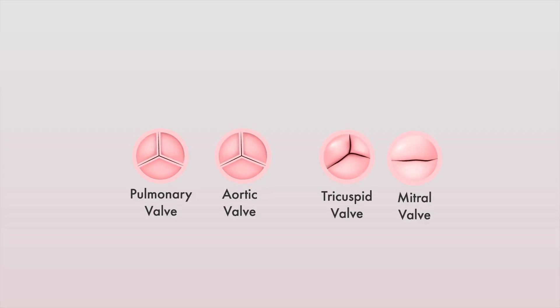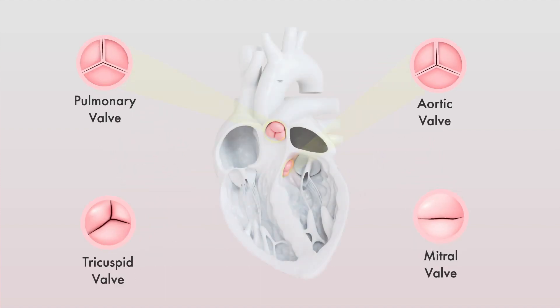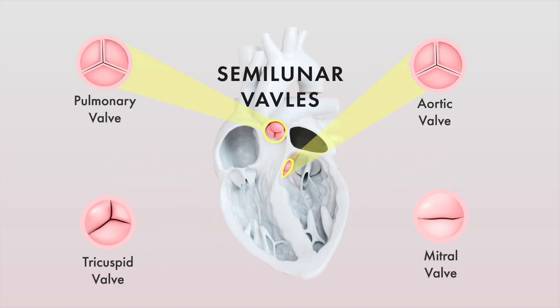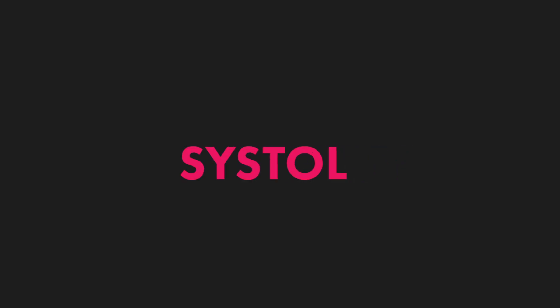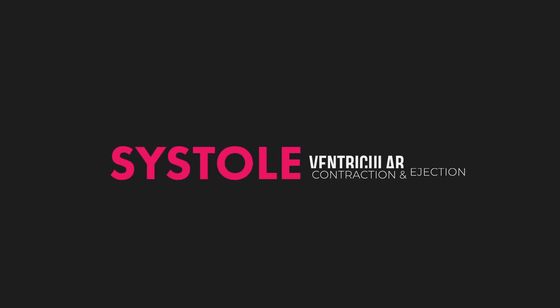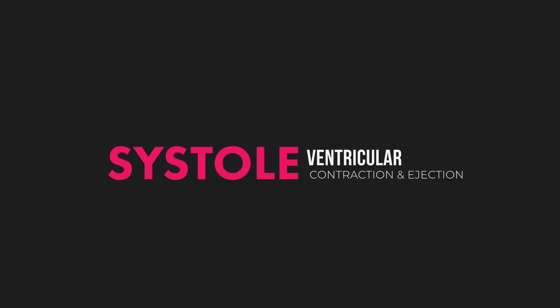There are four heart valves in total, divided into two semilunar valves and two atrioventricular valves. At the beginning of systole, the atrioventricular valves close, preventing backflow of blood into the atria while the ventricles contract.